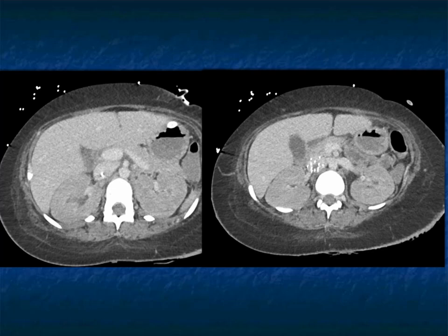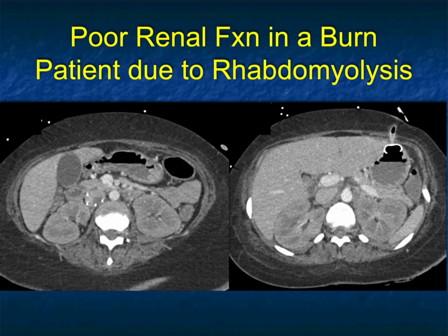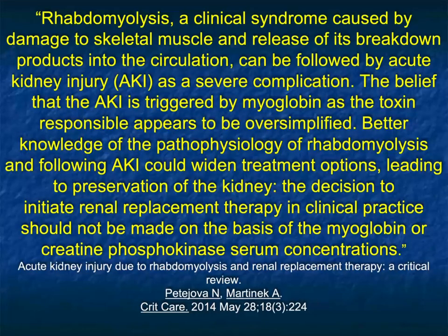In patients who've had trauma, particularly muscular trauma, there's something called rhabdomyolysis, which can cause very much the same thing. In burn patients, rhabdomyolysis is very common. The patients can get renal shutdown and renal failure. Patients may need dialysis if there's significant muscle injury with rhabdomyolysis. It's a clinical syndrome caused by damage to skeletal muscle and release of its breakdown products into the circulation, and it can be followed by acute kidney injury as a severe complication. The belief is that the kidney injury is triggered by the myoglobin as a toxin responsible, but that's probably a little bit simplified.